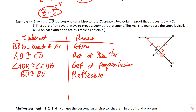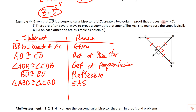Statement five: triangle ABD is congruent to triangle CBD — reason: side-angle-side. Statement six: angle A is congruent to angle C — reason: CPCTC, corresponding parts of congruent triangles are congruent. That completes the proof, showing angle A is congruent to angle C.